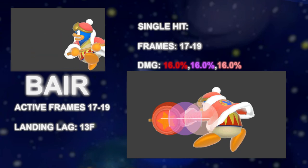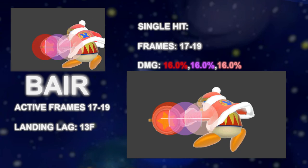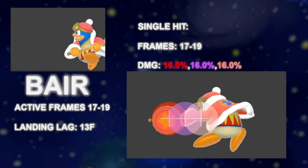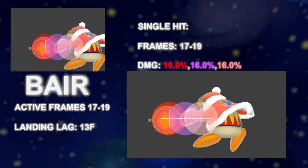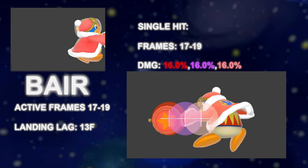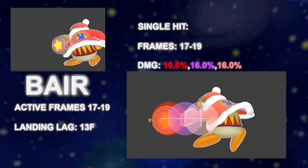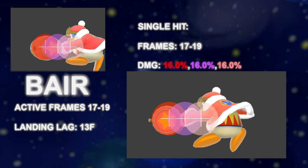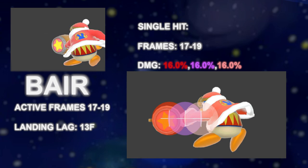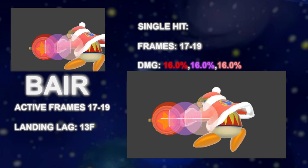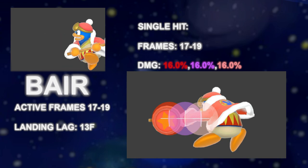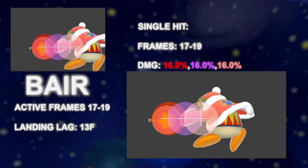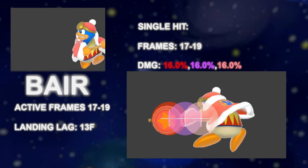This move's hitbox now perfectly matches the animation, so much so that the hitbox is greatly reduced in size from Smash 4. Comes out frames 17 through 19, lasting 3 frames — one of DDD's killing aerials. This move has a facing restriction labeled check B in the script, similar to check F, check front or check back.